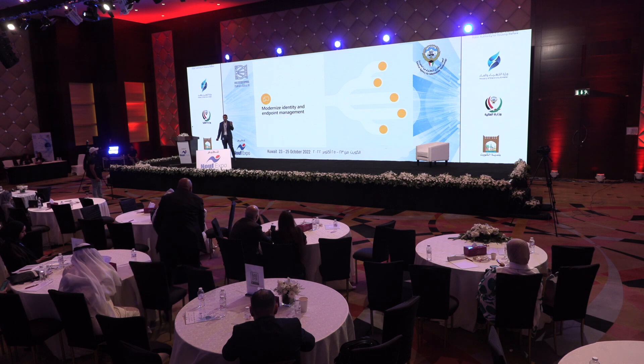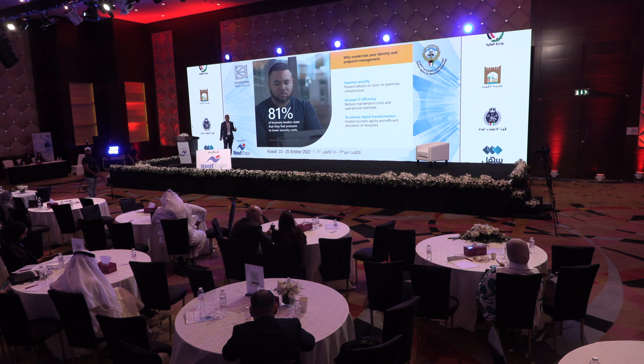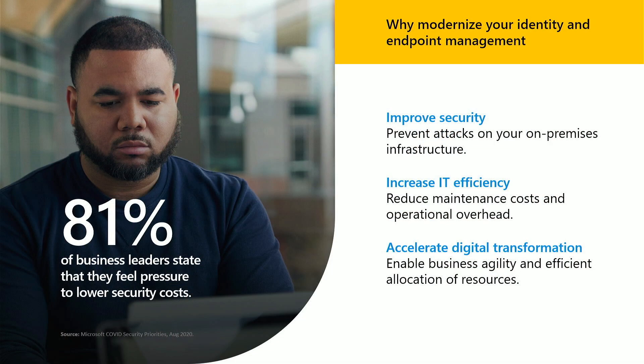The second pillar is how we can modernize identity and endpoint management. Modernizing identity and endpoint management provides clear benefits: more security, more reliability, more flexibility. Statistics say 81% of business leaders feel the pressure to lower security costs. On-premises infrastructure is the common attack vector — attackers know what it takes to get down an on-prem infrastructure. When we modernize and start moving identities and devices to the cloud, we gain the security and resilience of the cloud. Modernizing also provides IT efficiency, saving costs for IT maintenance, operations, and updates.